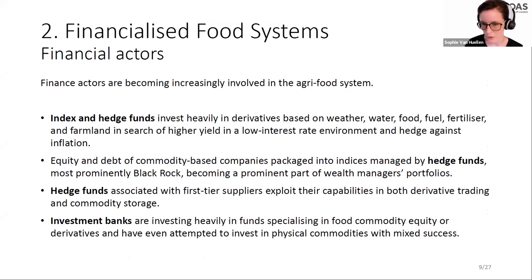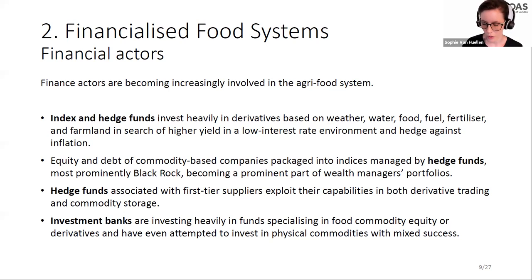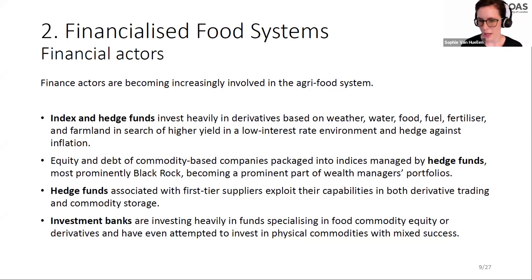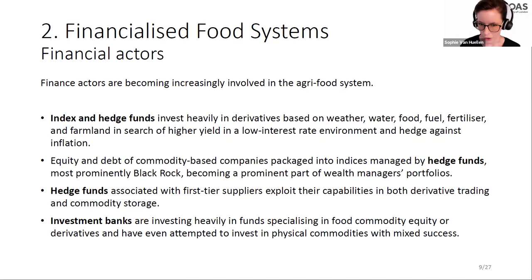Index funds and hedge funds began in the early 2000s to heavily invest in food-based derivative instruments, including weather, food, fuel, and fertilizer, as well as farmland — driven by a low-yield interest rate environment. Commodity derivatives were advertised as a good hedge against inflation. There is also a recurring narrative of a commodity super cycle and food shortages driven partly by climate change, encouraging investors to invest in food-related derivatives.